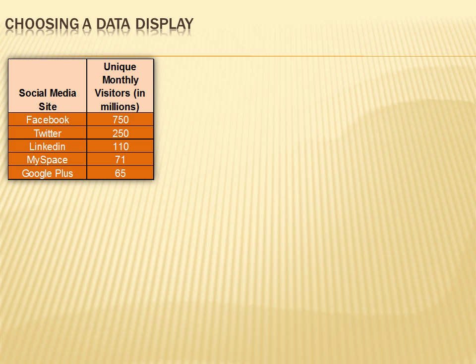Here's another set of data. This chart explains how many visitors there were at various social media sites. I can see that Facebook is clearly the biggest, Twitter has only about a third as many visitors, and LinkedIn, MySpace, and Google Plus are way below Facebook. But there may still be a better, more attractive way to explain and communicate this information.